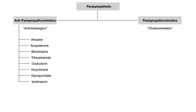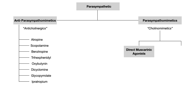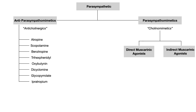Now let's talk about the other side — parasympathomimetic drugs, also known as cholinergic or cholinomimetic agents. These drugs agonize the M receptors and cause the effects you'd see if you allowed acetylcholine to naturally agonize different receptors. There are two subtypes: direct muscarinic agonists, which directly bind and activate muscarinic receptors, and indirect muscarinic agonists, which are more complex and tend to get tested more often.